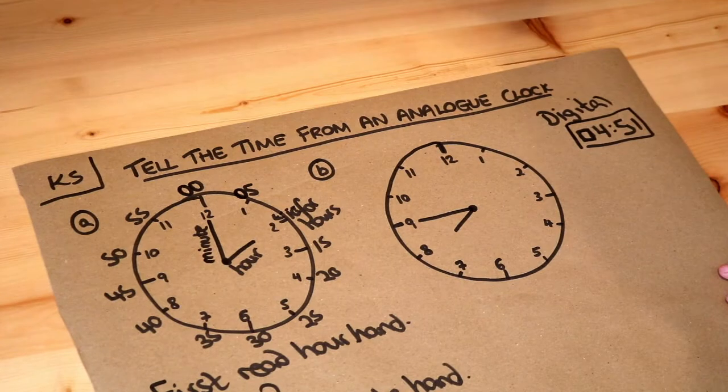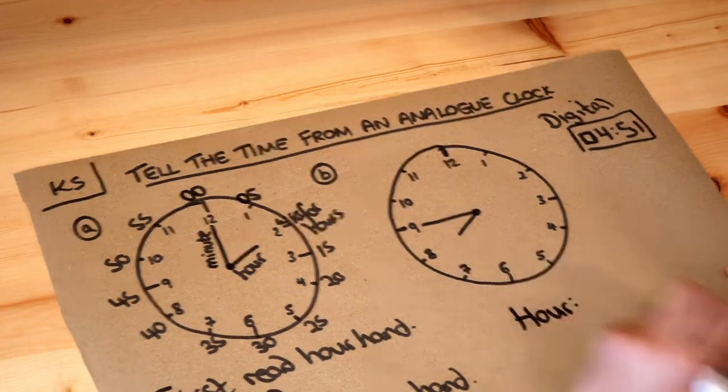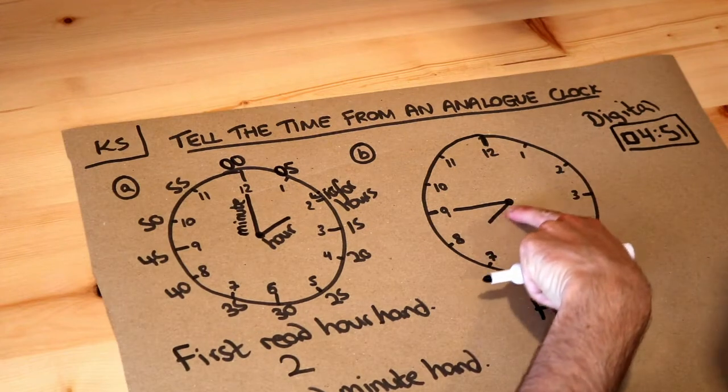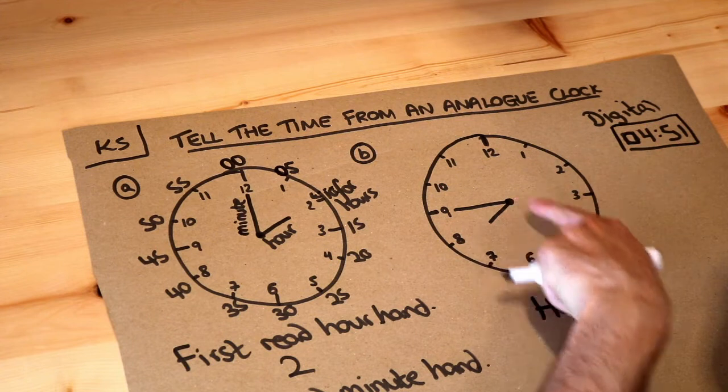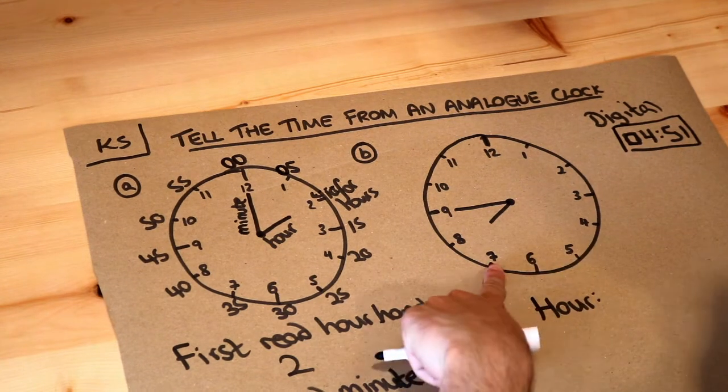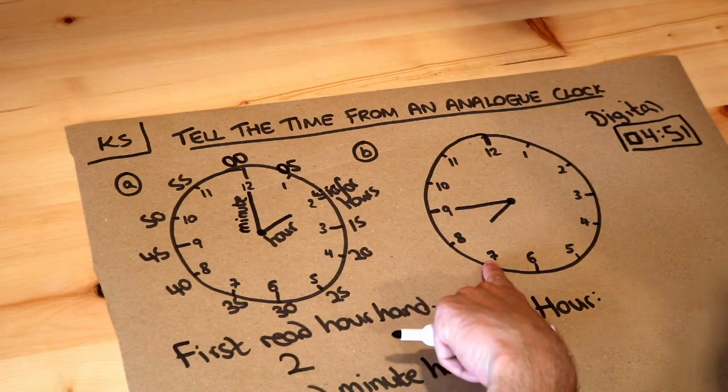What about this second one? We're going to first read the hour hand. So what's the number of hours? Well, this hour hand, this short hand, is somewhere between 7 and 8. So which is it? The hour hand has passed the 7 hour mark but hasn't yet reached the 8 hour mark, so we use the lower of the two numbers.